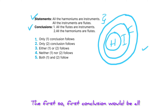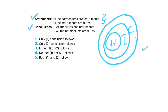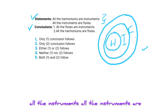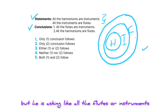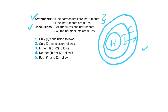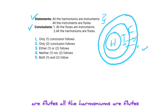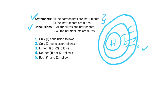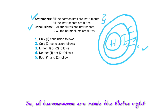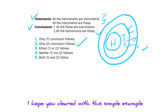The first conclusion is: all the flutes are instruments. No, it is not correct — all the flutes are not instruments. The statement says all instruments are flutes, not the other way around. So the first conclusion is wrong. The second conclusion is: all the harmoniums are flutes. Yes — all the harmoniums are inside the flutes. So the second one is right. Therefore, only two follows.